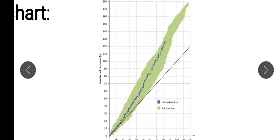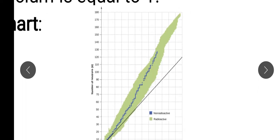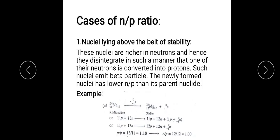On the Segre chart, the blue line represents the zone or belt of stability. If a nuclide lies above the belt — that is, its nucleus is above the belt of stability — it means the nuclide is neutron-rich, because the Y-axis represents the number of neutrons. Hence, these nuclides disintegrate in such a manner that one of the neutrons is converted into a proton.